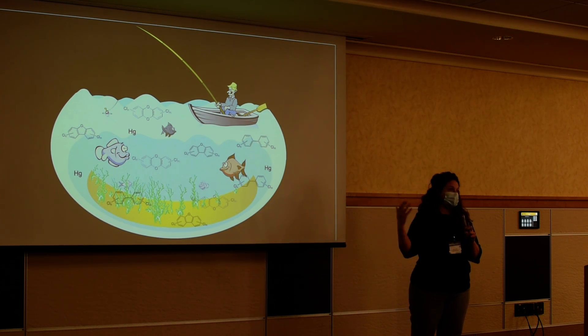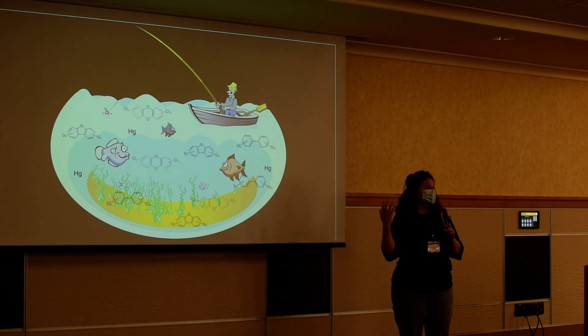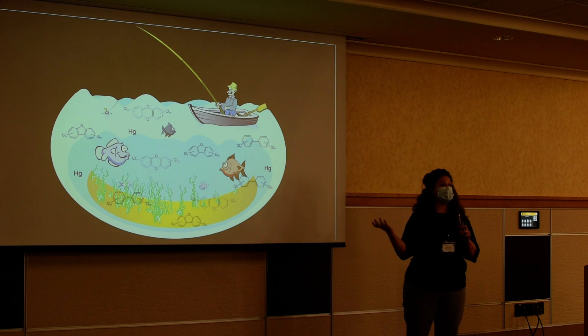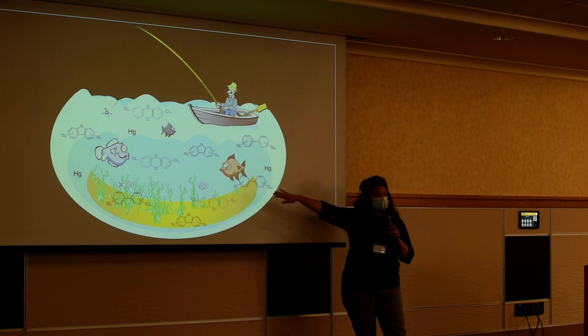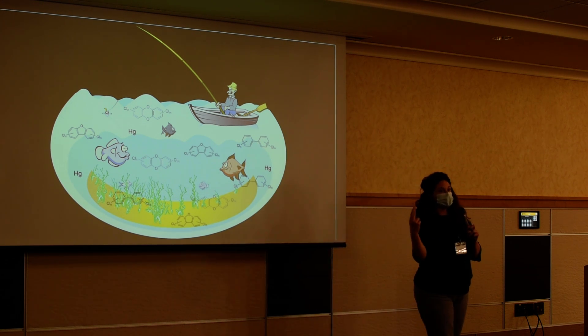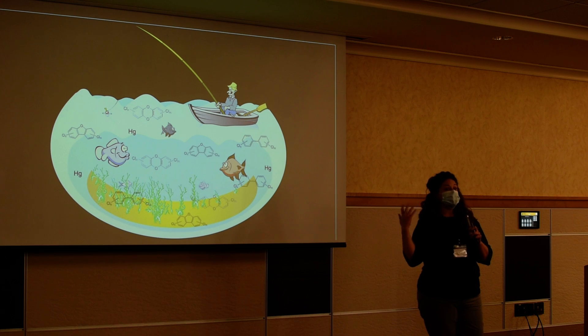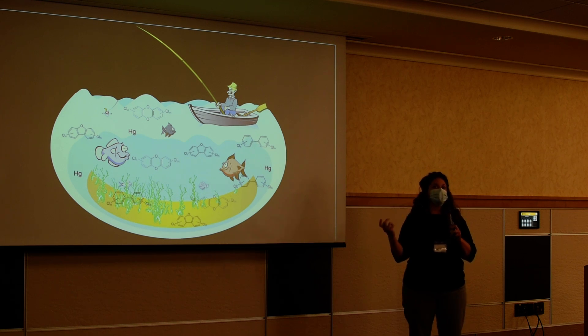Those hazard quotients can then be summed to redefine what a safe fish consumption guideline looks like. So rather than saying you can eat this much fish based on polychlorinated biphenyls and this much fish based on mercury, we can combine the two and say, thinking about these combined or mixed toxicity effects, we can create safer fish consumption guidelines.